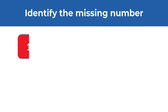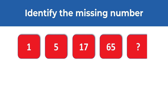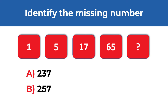The numbers you see are 1, 5, 70, 65, and then comes the missing number. You have 4 different choices for the missing number: Choice A, 237; Choice B, 257; Choice C, 277; and Choice D, 297.